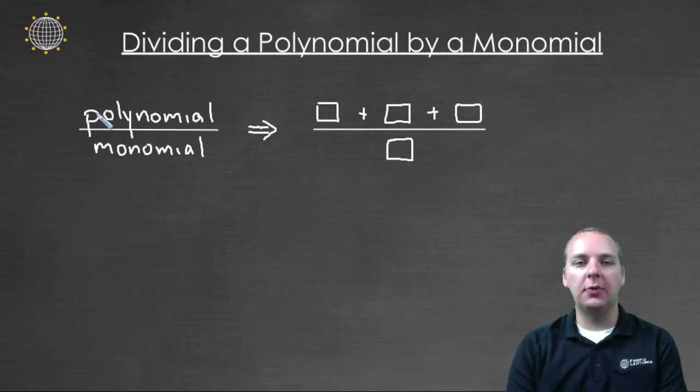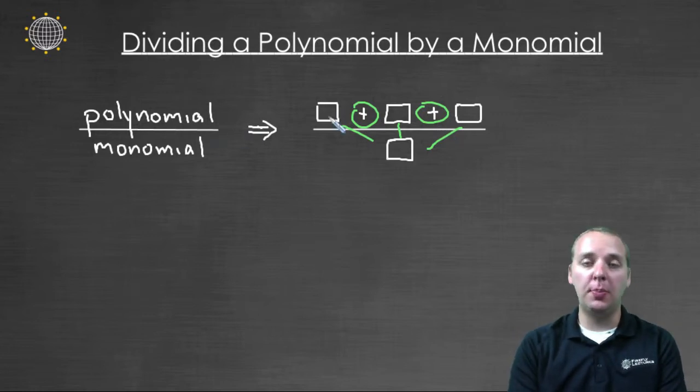So here's what it looks like. If we have a polynomial with a few terms divided by a monomial with a single term, what we can actually do is break this large single fraction up into a couple of different fractions. Because since the numerator has addition or subtraction in it, we can take each of these terms in the polynomial in the numerator and divide each of them by the monomial term in the denominator.